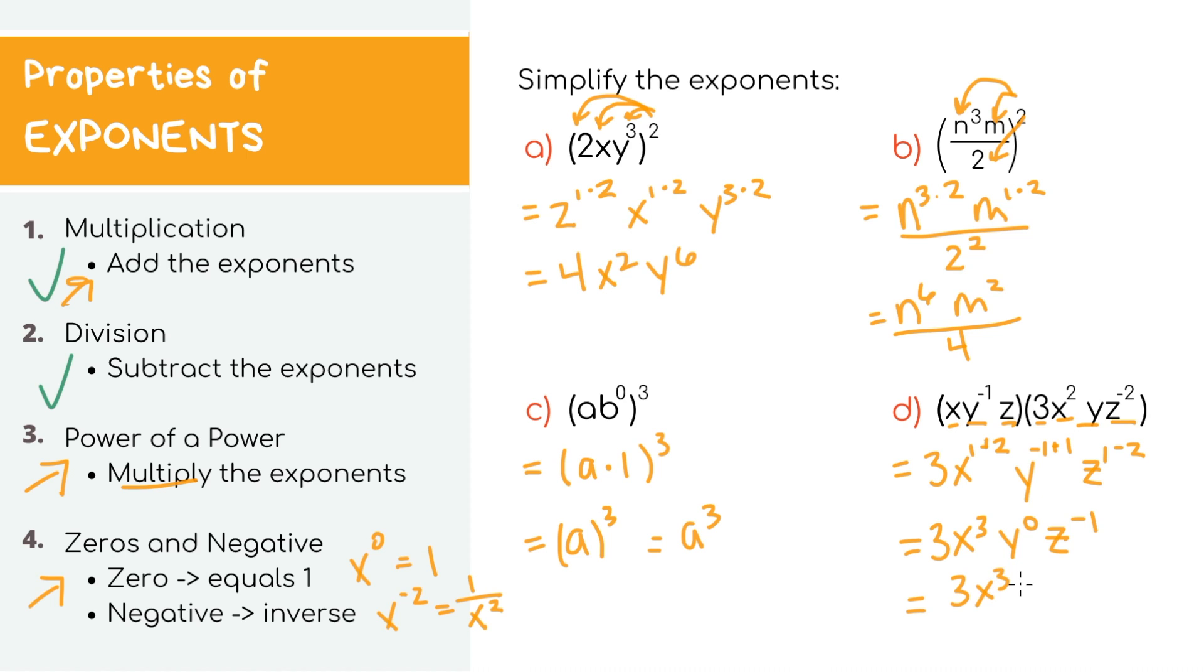We just talked about that anything raised to the zeroth power is just 1, so the y actually completely disappears. And z to the negative first power, we'll just take the inverse. So flip it so that the z is on the bottom. And that's our simplified expression.